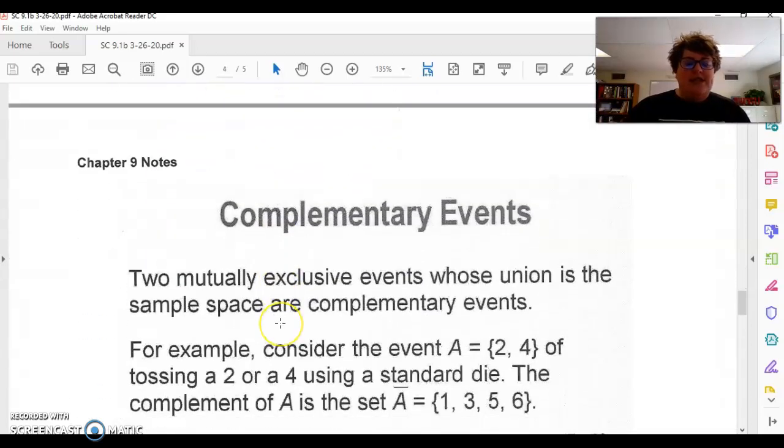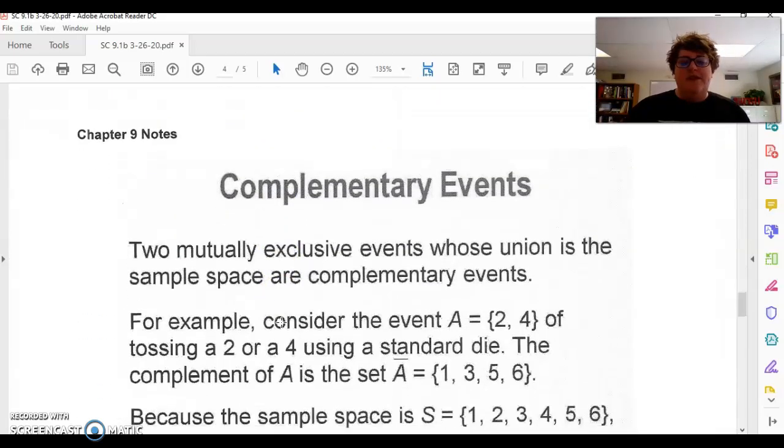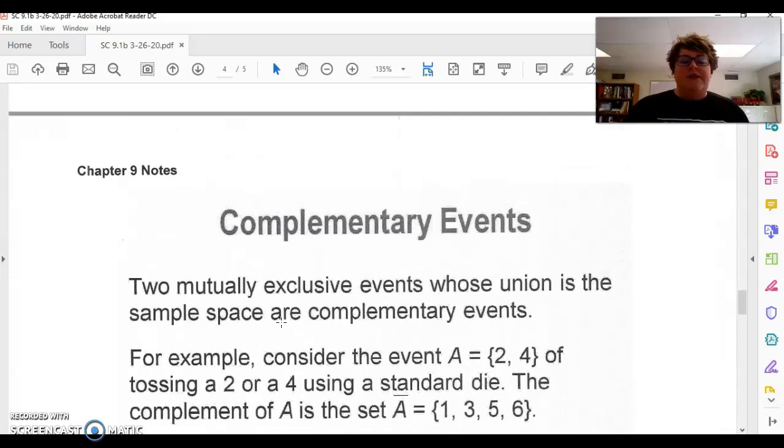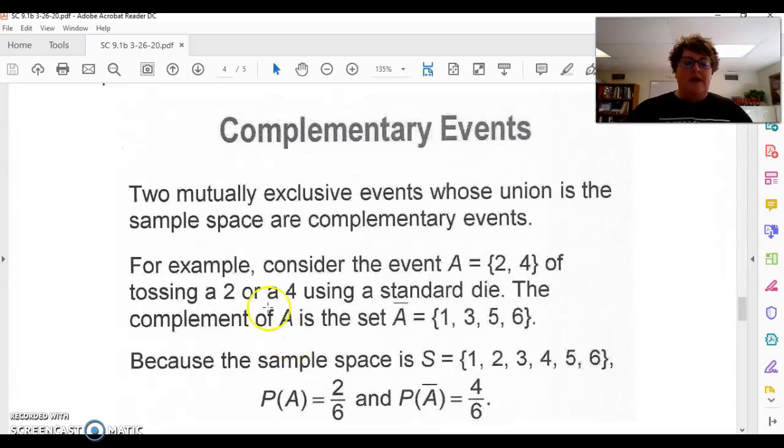So the last thing is talking about complementary events. And complementary events are the combination of the event occurring and the event not occurring. Those two things put together. Two mutually exclusive events whose union is the sample space. So I have part of it, I have the second part of it. When I put them together, everything in the sample space is taken care of. These are called complementary events.